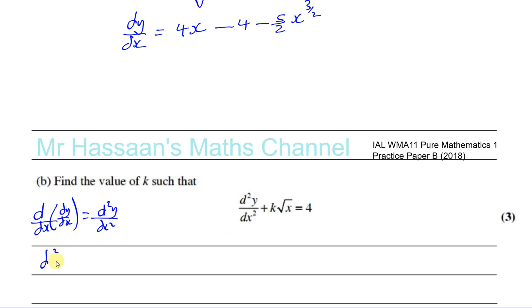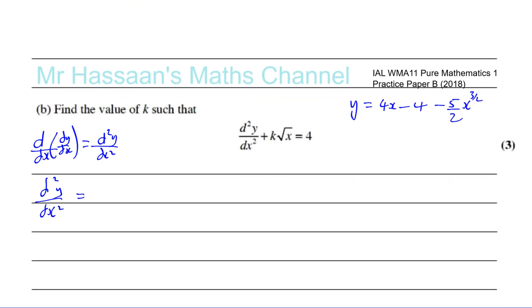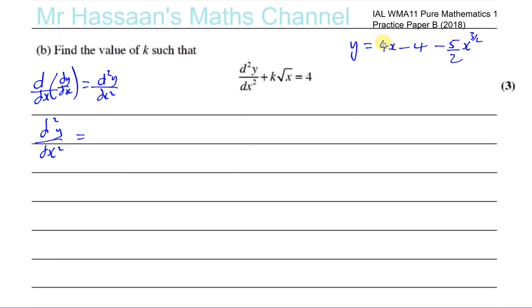So d²y/dx² equals: starting from dy/dx which is 4x minus 4 minus 5 over 2 times x to the power of 3 over 2, we differentiate once more. 4x becomes 4, the constant minus 4 becomes 0, and then 3 over 2 times minus 5 over 2 is minus 15 over 4. Taking 1 from the power gives x to the power of 1 half.